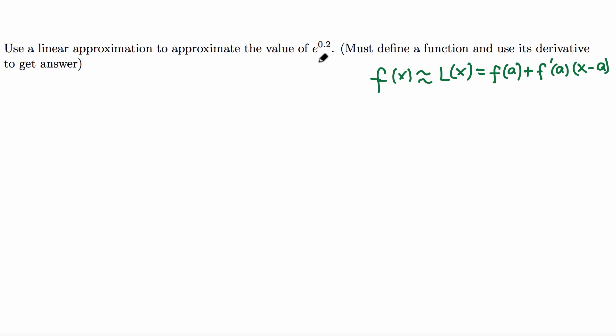For this function, e raised to 0.2, we need to come up with a function. Let's say the function is f(x) = e^x, and we need to take a nice number a. 0.2 is not nice, but we can take very close to 0.2, let's say 0. That's a nice number, so these are the assumptions.